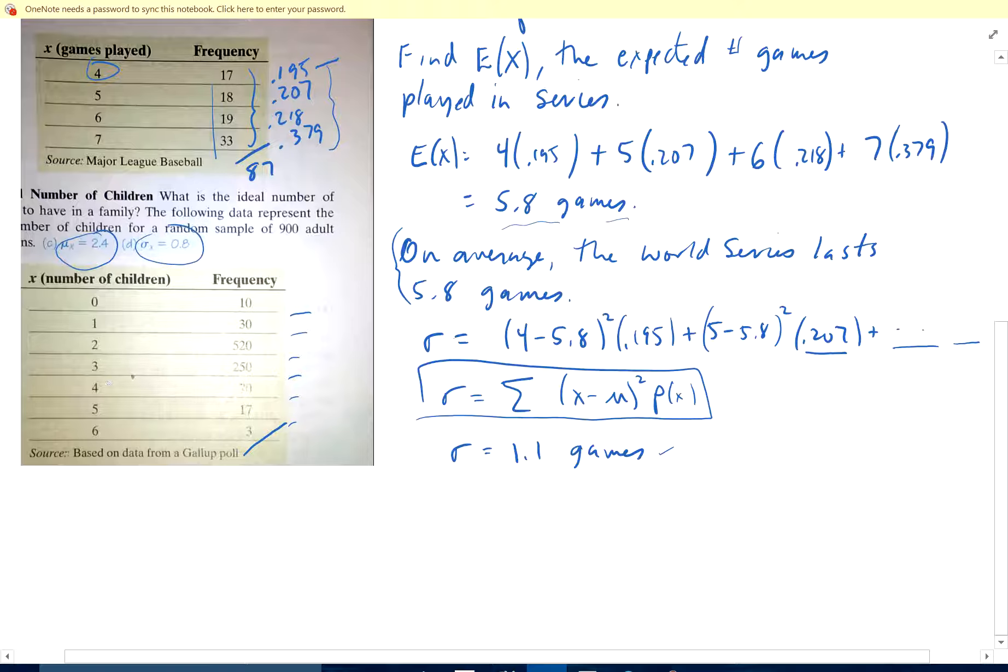This is the number of children that a random sample of 900 adults has. So the interpretation here would be: on average, the number of children a family has is approximately 2.4. You've heard that before - 2.5 kids as average family size? Well, this is where it comes from.